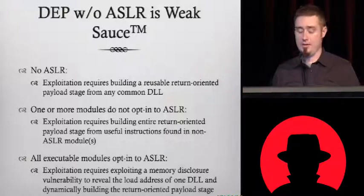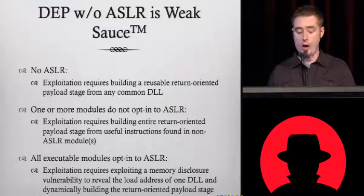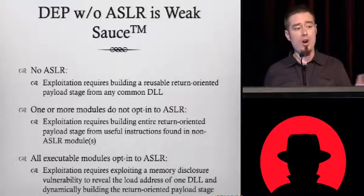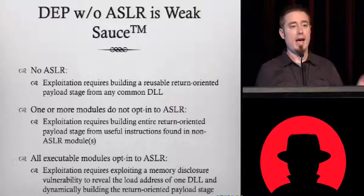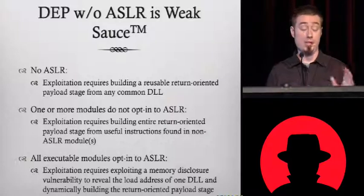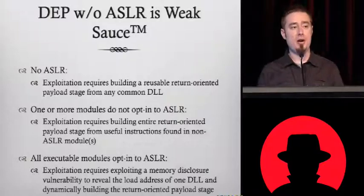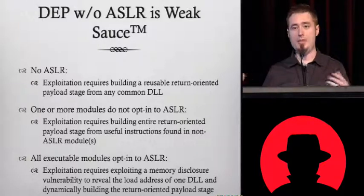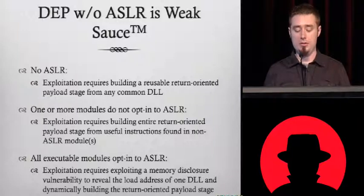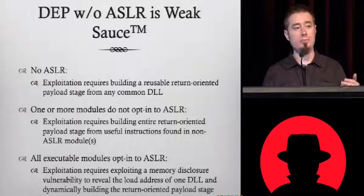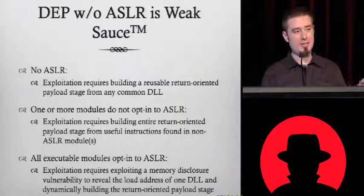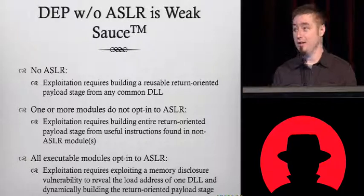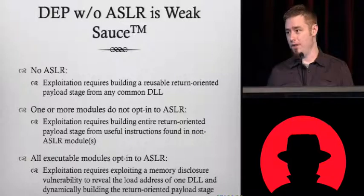If you have an ASLR system that has one or more modules that do not opt into ASLR, all you need to do is find which one that is and solely use that for your return-oriented exploitation. This may require a variety of strategies — a little bit of ROP, a little borrowed instructions, a little RET-to-LIBSI — you kind of have to mix and match. One thing you'll find is if you look at a lot of common plug-ins and even common web browsers, there'll be one or two DLLs that still don't opt fully into ASLR. If you just bring them up in a debugger, you can usually find them.